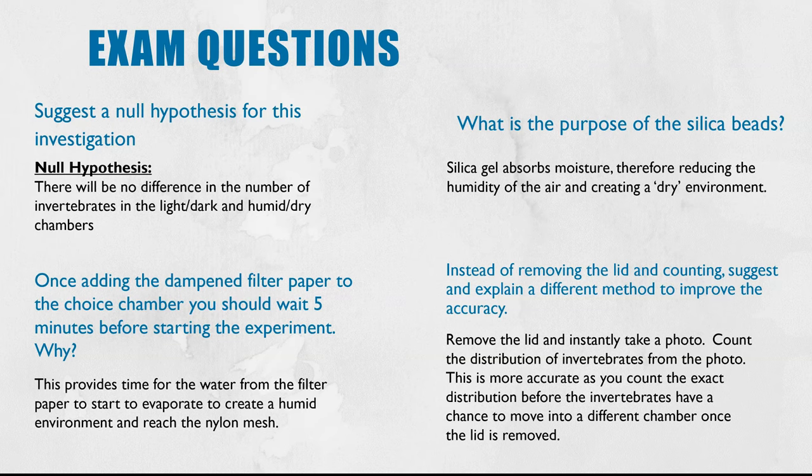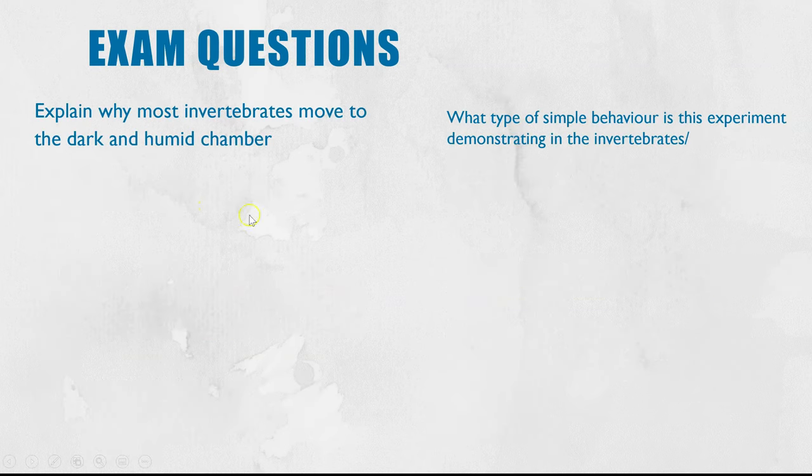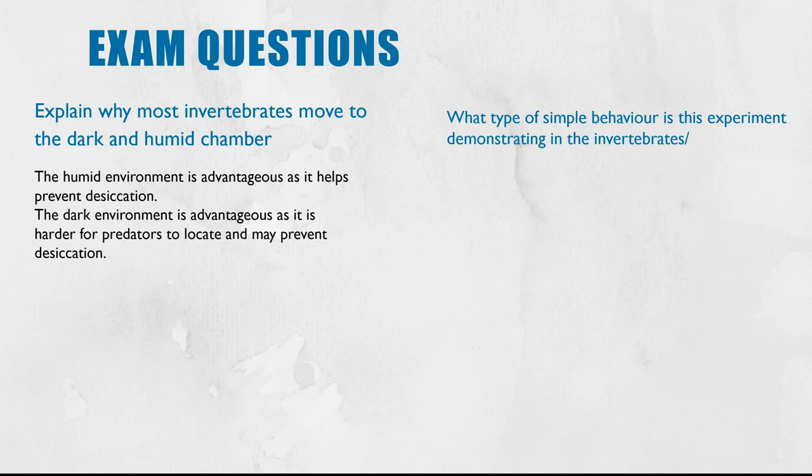Explain why most invertebrates move to the dark and humid chamber. So here's a theory question. The humid environment is advantageous as it helps to prevent desiccation, meaning drying out, so you will have less water evaporating from their surface. But also the dark environment will prevent desiccation and it means that they're going to be less likely to be seen or captured by predators.